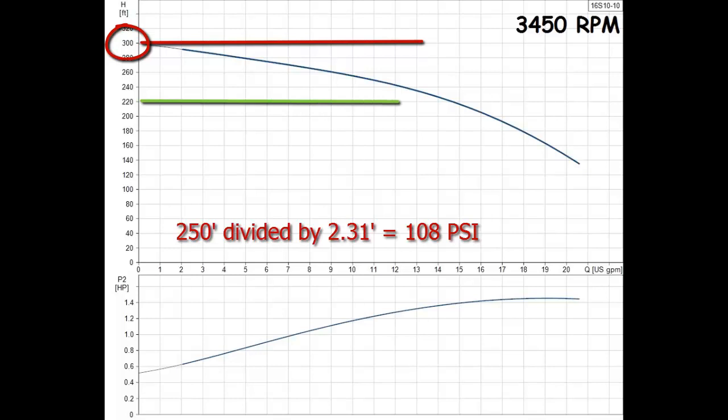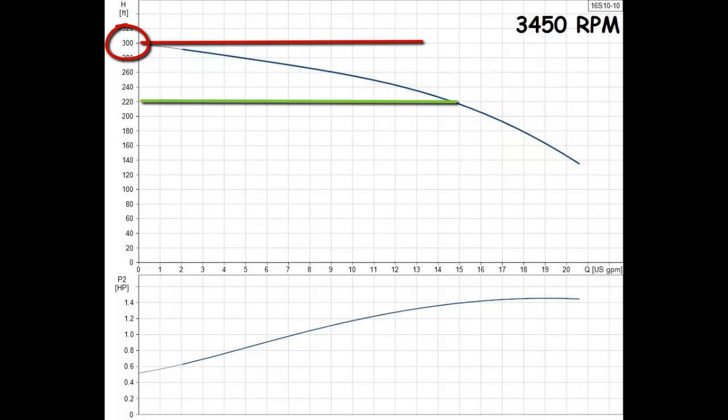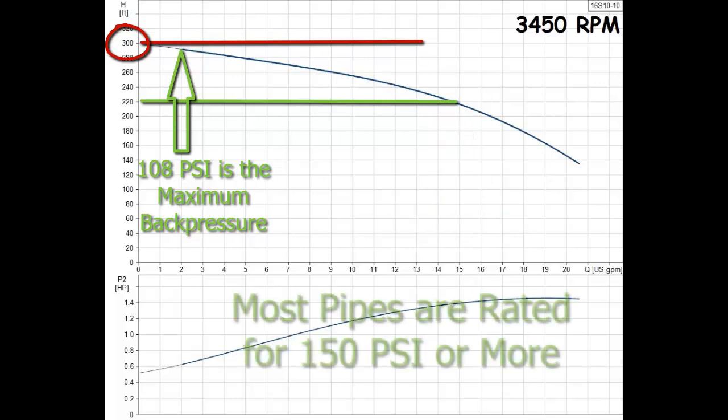So while the CSV is delivering a steady 50 PSI as flows vary from 15 to 2 gallons per minute to the house, the back pressure on the pipe before the CSV will vary from 50 to 108 PSI respectively. The back pressure must be lower than the pressure rating of the pipe and CSV, which is generally not a problem as most pipes are rated for more pressure than the pump can produce.